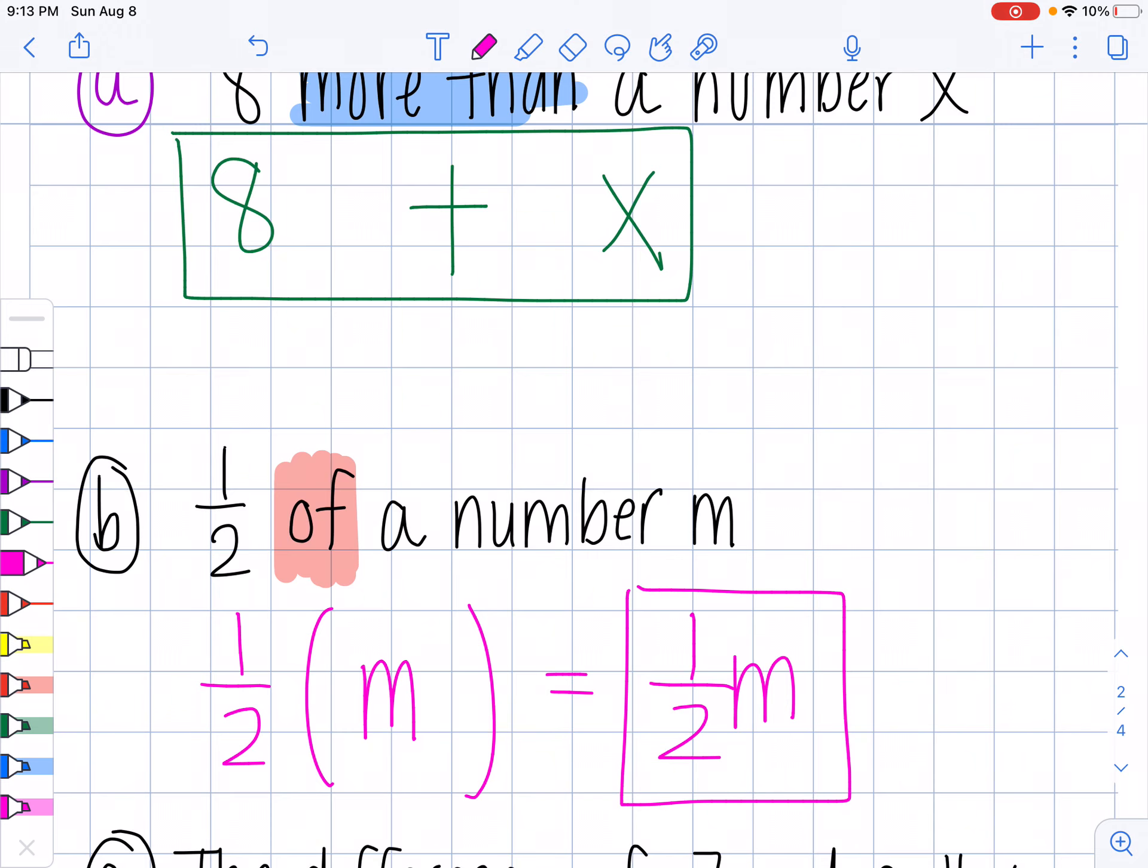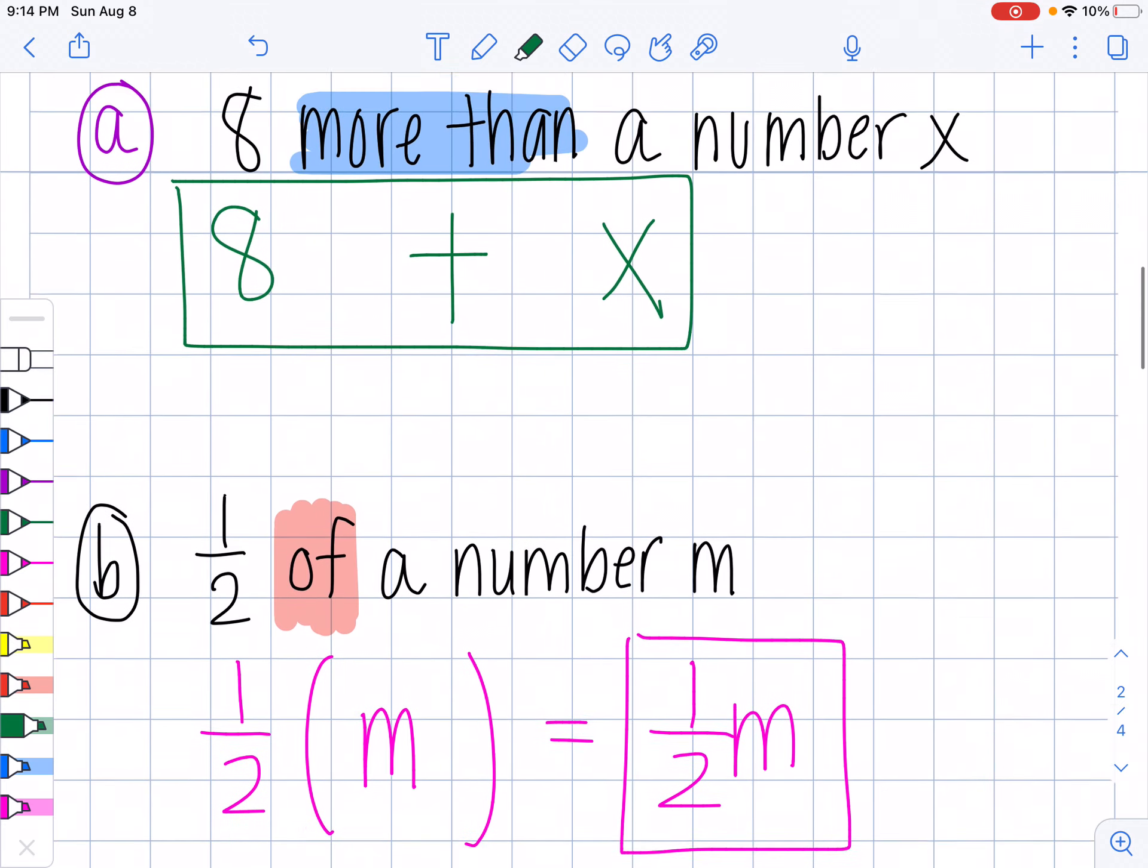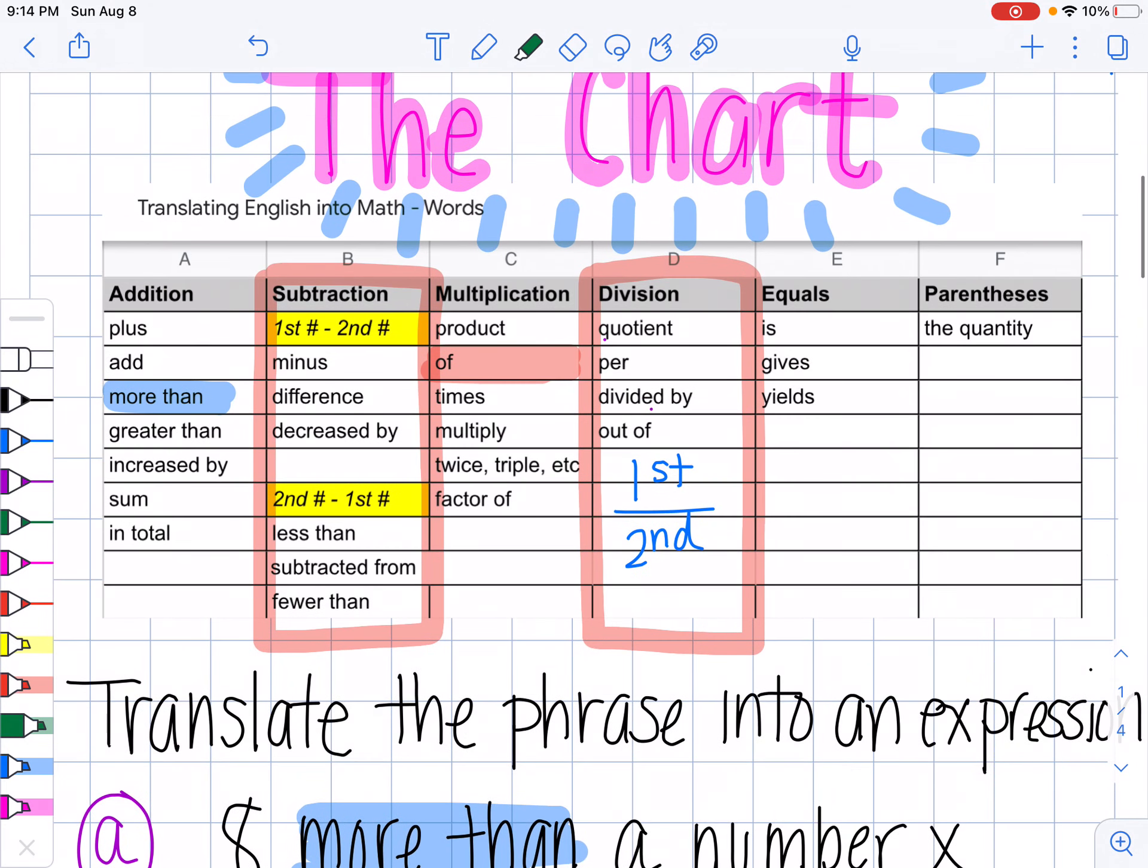Okay, next one. The difference, that's the keyword, of seven and a number N. So I know in here it looks like I have difference and of. When I have difference, they have to tell me what my difference is. So they're going to use, it's like difference of is kind of like combined together. The difference of my numbers. So I come up here. Difference is represented by subtraction.